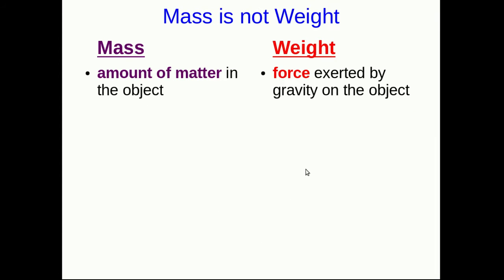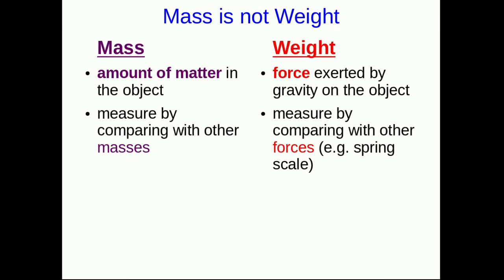One of the reasons people are often confused by mass is that they mix it up with weight. Mass is quite different from weight. While mass is the amount of matter in an object, weight is a force. It's the force exerted by gravity on the object. So you measure mass by comparing with other masses, like on a balance, whereas you measure weight by comparing with other forces, such as a spring scale.